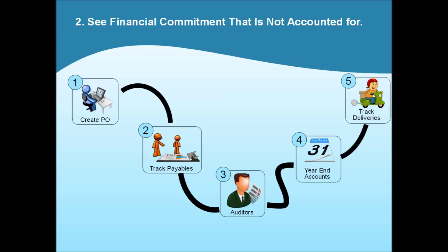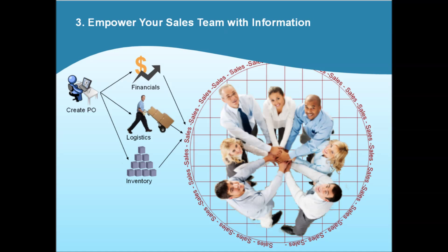A properly managed purchase order system will quickly tell you what's been ordered, what's been shipped, what's been received but not invoiced, and so on. Display purchase order information to the sales team when they are checking stock levels. Then, if you run out of something but they can see that 100 more are due to arrive tomorrow, they will be more confident in taking the sale.